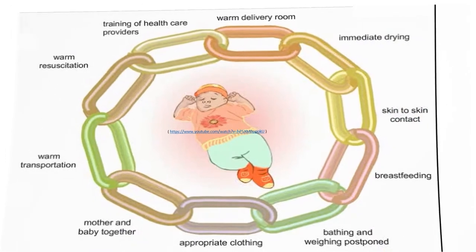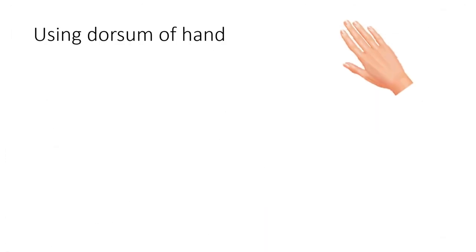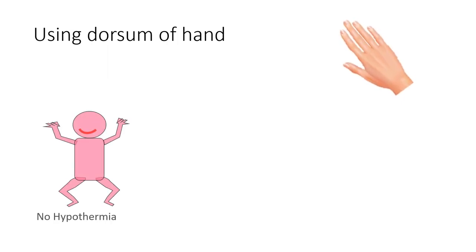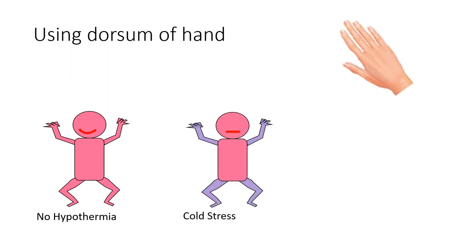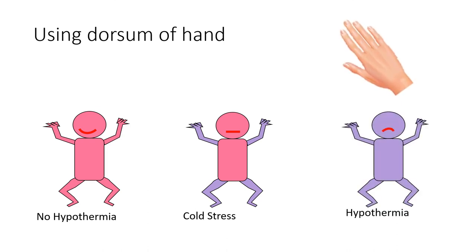To assess a newborn's temperature without a thermometer, we can use the dorsum of the hand. A child with a warm center and warm peripheries is considered out of danger. If the center is warm but peripheries are cold to touch, cold stress should be suspected. If the whole body is cold to touch, immediate action for hypothermia should be taken.